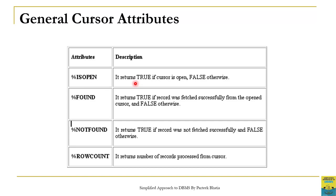%IsOpen returns true if the cursor is open, otherwise it returns false. So %IsOpen returns a boolean value — true if the cursor is open and false if the cursor is not open. %Found also returns a boolean value of true or false: it returns true if records are fetched successfully from the opened cursor, and false otherwise.